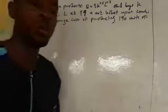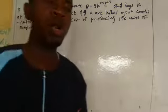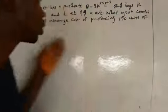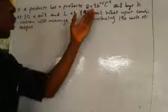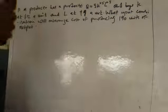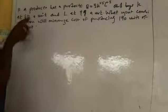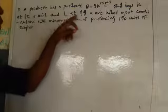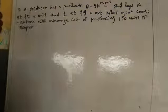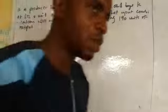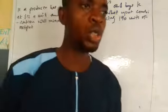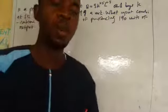In this video, we are going to be looking at cost minimization. Cost minimization is a situation whereby a producer is trying to reduce the cost of production so that he can get more profit. In this question, the producer has a production function of 5K^0.5 L^0.5, and buys capital K at $12 and labor L at $9. The question asks: what input combination will minimize the cost of producing 190 units?